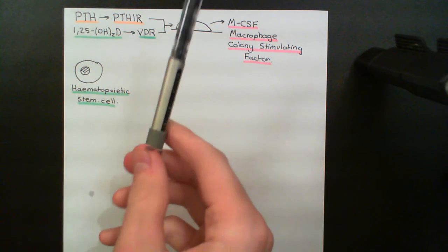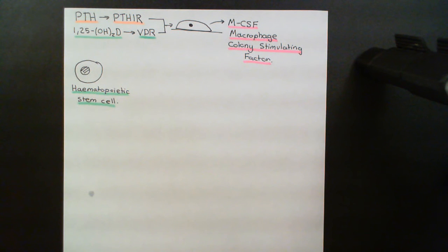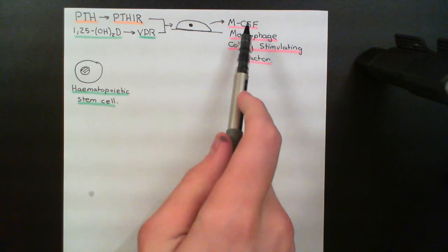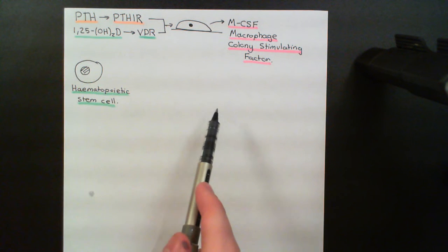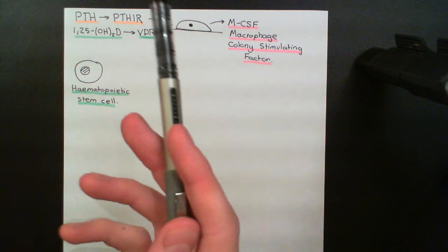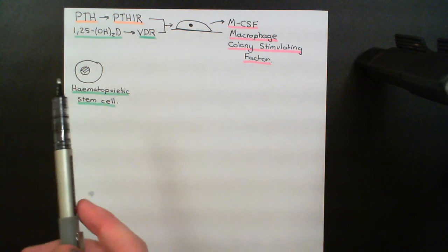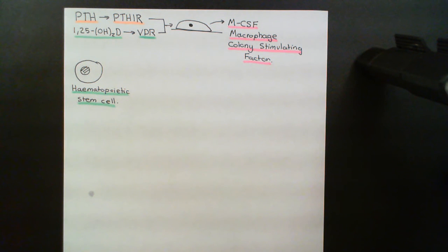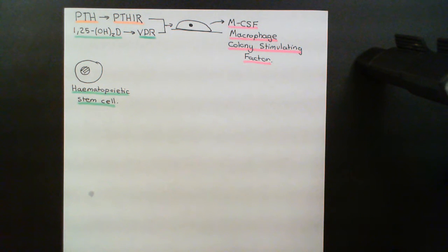The raw fact is: osteoblasts, when acted upon by parathyroid hormone and 1,25-dihydroxyvitamin D, start releasing macrophage colony-stimulating factor. This goes off and affects certain cells of the hematopoietic system — whether the hematopoietic stem cell itself or progeny further along in differentiation — and the overall result is that more pre-osteoclasts arrive back at the bone.